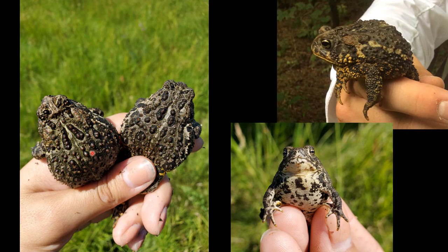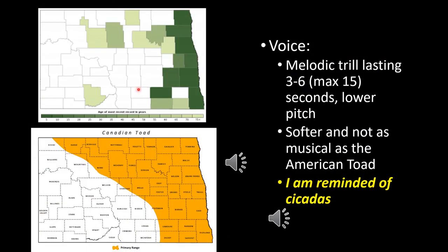Here are a few more images showing darker background coloration — background color is heavily influenced by the environment. In a sandier environment you'd expect lighter toads; in a more soil-based habitat, darker ones. Again we've got that nice cream belly with spotting. The distribution map shows them found up and down the Red River Valley and in the north-central and northwest portions of the state, largely absent from the western part. Some older records from south-central areas need to be verified with more recent observations.